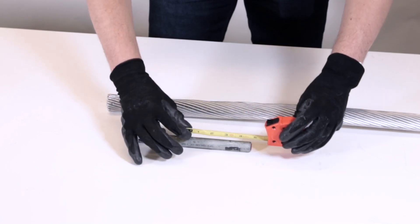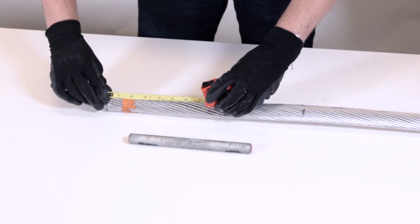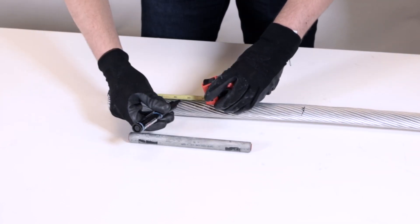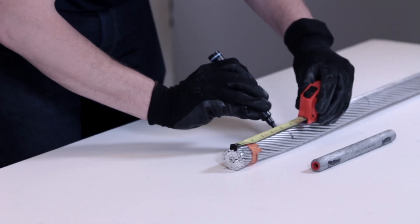Measure from the nurl in the middle of the galvanized steel splice tube to the end. Add one inch to this length to allow for aluminum strand expansion when the splice tube is applied. Mark this length on the conductor as the point where the aluminum strands will be cut back.